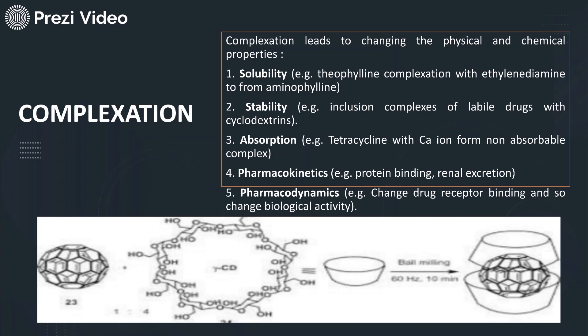When we need to identify whether a complex is formed or not, this can be done because each individual substrate has a different property and each individual ligand has a different property. But when the substrate and ligand form a complex, the complex altogether has different properties. The properties of a complex are not similar to the substrate, not similar to the ligand - it has altogether different properties, both different physical properties and different chemical properties.